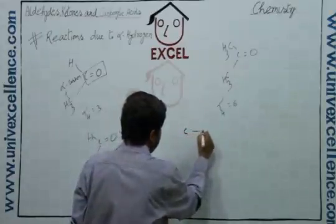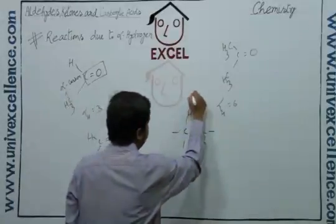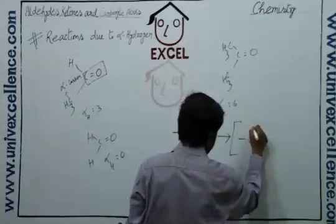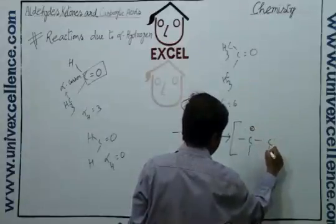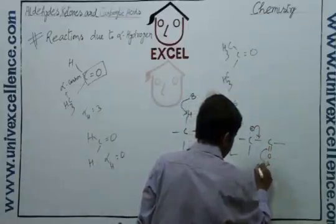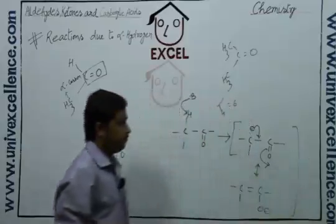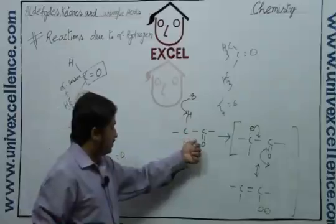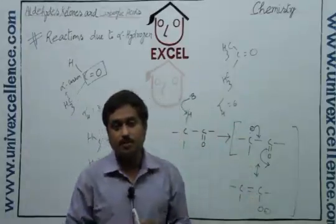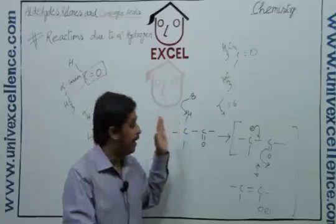If we take the example of C double bonded to O, in the presence of a base, the alpha hydrogen can be easily extracted by that base and the conjugate base that is formed will be resonance stabilized. As you know, if the conjugate base is resonance stabilized, then automatically the acidity will be higher. So the alpha hydrogen is acidic in nature in case of aldehydes and ketones.